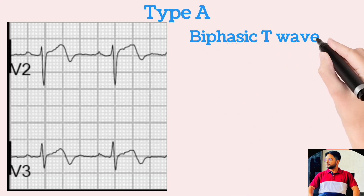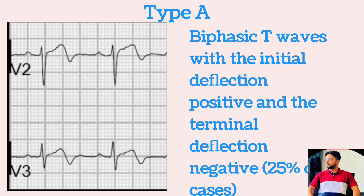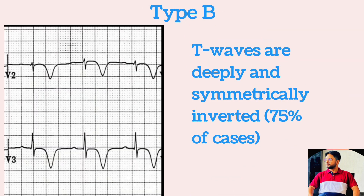There are two patterns of T-wave abnormality in Wellens syndrome: Type A — biphasic T-wave with initial deflection positive and terminal deflection negative; and Type B — where the T-waves are deeply and symmetrically inverted.